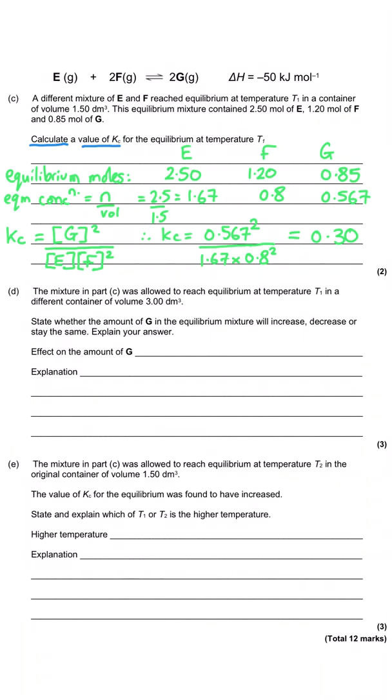Then in the next question, we're told that that same mixture from C is allowed to reach equilibrium at the same temperature, T1, but this time in a different container, which has got a volume of 3dm cubed. And so we're asked to state whether the amount of G in the equilibrium mixture will increase or decrease or stay the same, explaining our answer. So this time we've got three marks. We'll just get one mark for the effects on the amount of G and two marks for our explanation.